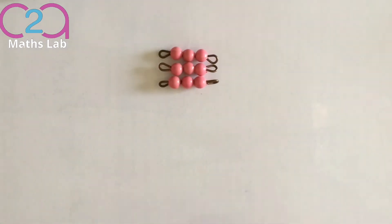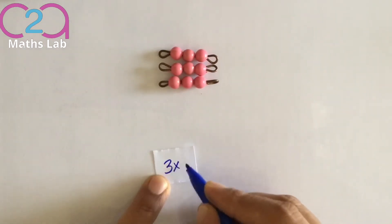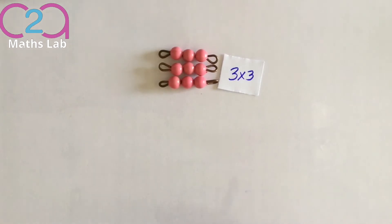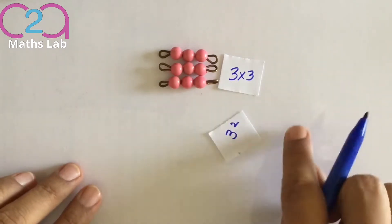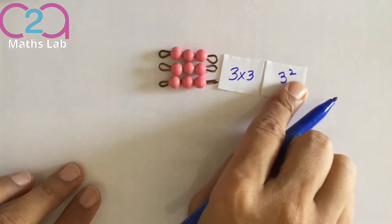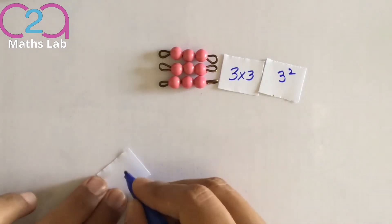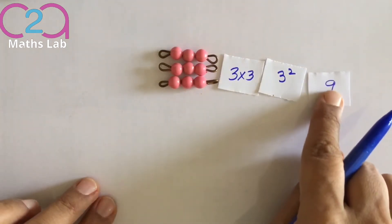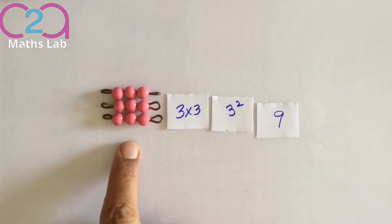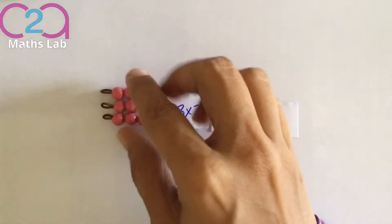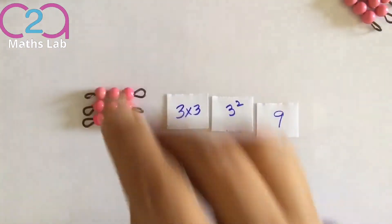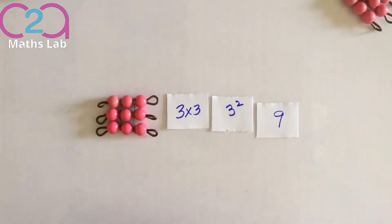So we can say that 3 times 3, or 3 square, is 9. So 3 times 3, which we also call 3 square, is 9. So instead of this, we will keep a square of 3. So this is 3 square.